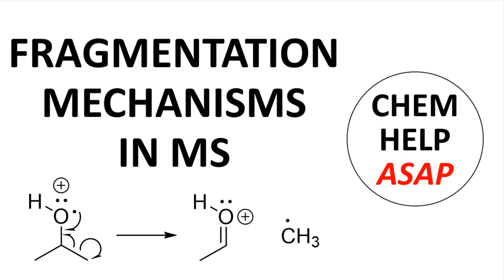Welcome to Chem Help ASAP. Let's review two of the most common fragmentation pathways seen in mass spectrometry, charge and radical site-initiated fragmentation.